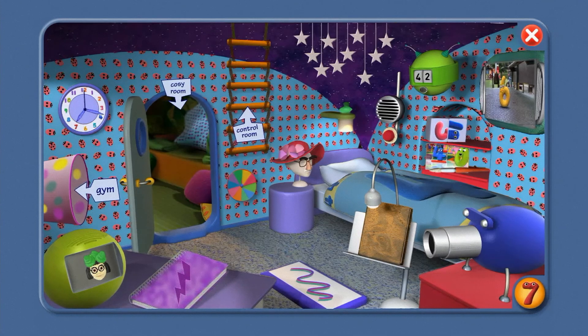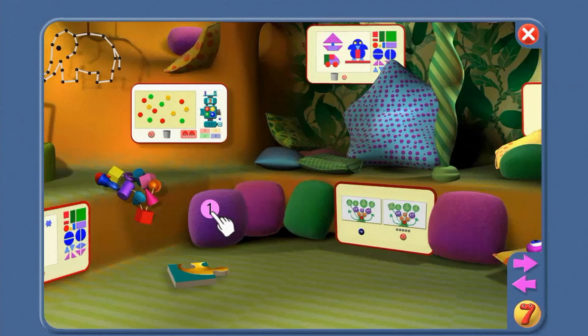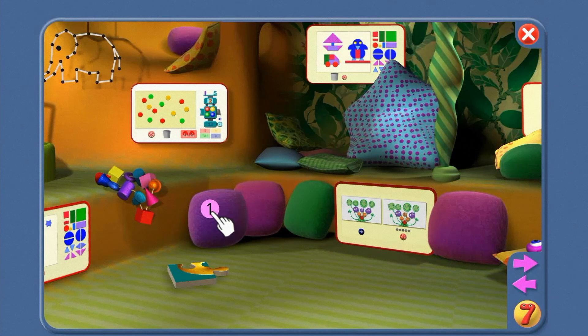Hi, Agent. Number Jack 7 here. Let's go to the cosy room. I'm going to click here.